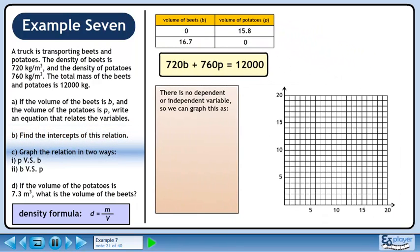In part c, we'll graph the relation in two ways. Since there is no dependent or independent variable, we can graph this as p equals minus 0.95b plus 15.8, or b equals minus 1.06p plus 16.7.